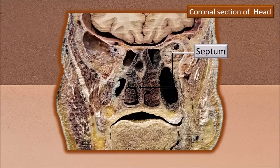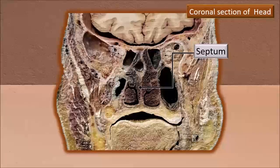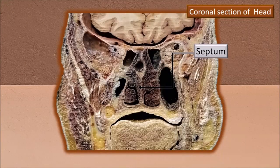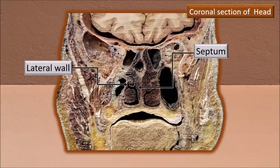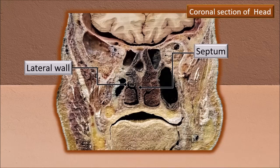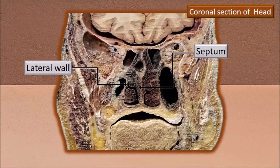Here is a coronal section of the head region. Once again, the septum is very clearly visible. The lateral wall, as seen in this section, reflects the true cavitary structure of the nasal cavity. Unlike the vertical-plane septum, the lateral wall seems to have a lot of shelf-like projections. Those projections are the conchae — finer details in a future lecture.